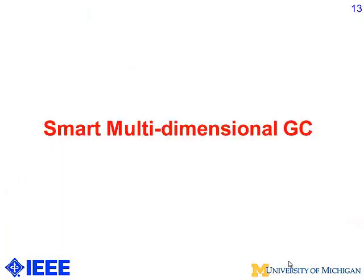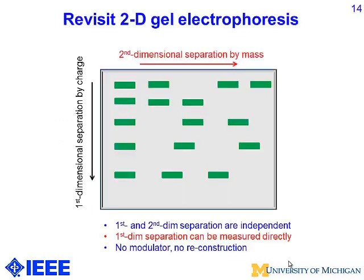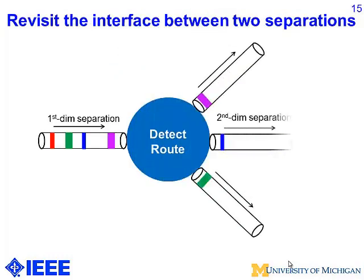Now let's talk about our smart multidimensional GC design. Revisiting 2D gel electrophoresis: the two separations are completely independent, and the first-dimensional separation can be measured directly — no modulator, no risk of confusion. The key idea is to put a detector and a routing system after the first-dimensional separation. This detector works like a phone operator: it routes the bands coming out of the first column into different channels downstream — one channel or multiple channels. It's a smart device that sends peaks one by one into different second-dimensional channels.